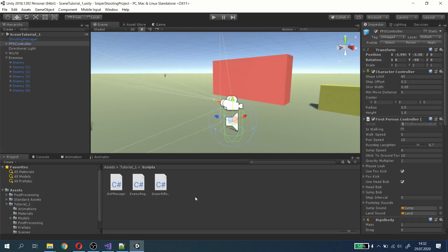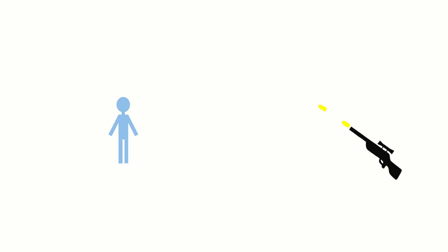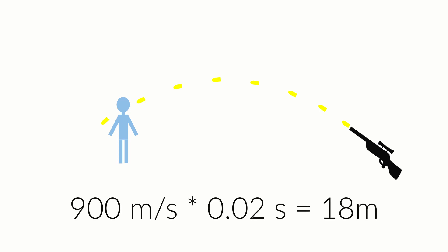Sniper shooting mechanics can be quite challenging to make. If we want to make a bullet in Unity that falls after some time, the first thing that comes to mind is using the rigid body and its physics system. But there are some issues with this solution. The sniper bullet moves at a speed of about 900 meters per second, so the bullet in every fixed update would have to teleport about 18 meters. There is a pretty high probability it would miss the target that we would expect it to hit.